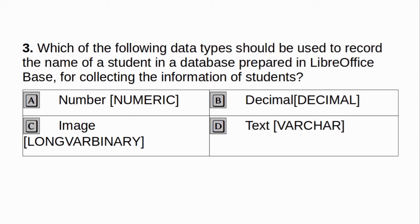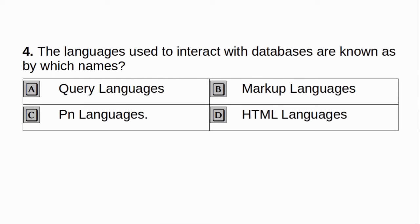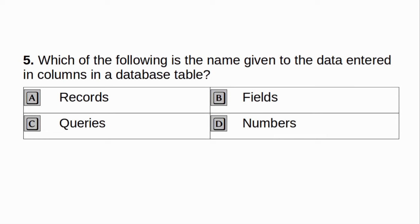Which of the following data types should be used to record the name of a student in a database prepared in LibreOffice Base? A. Number Numeric. B. Decimal. C. Image Long Binary. D. Text Varchar. Answer: D. Text Varchar. The languages used to interact with the database are known as: A. Query languages. B. Markup languages. C. Programming languages. D. HTML languages. Answer: A. Query languages.